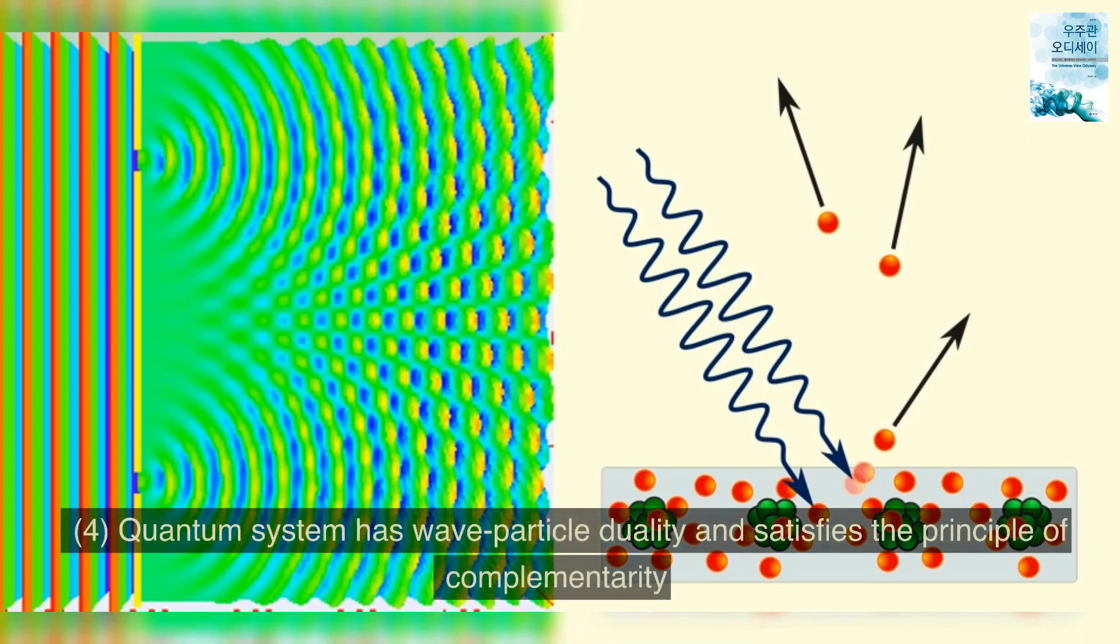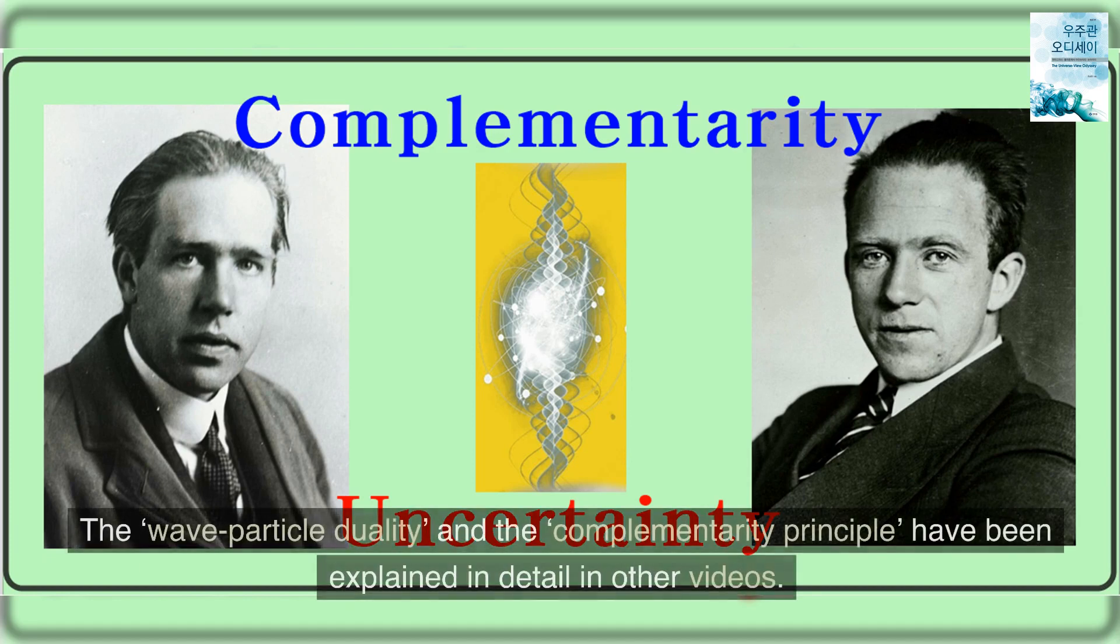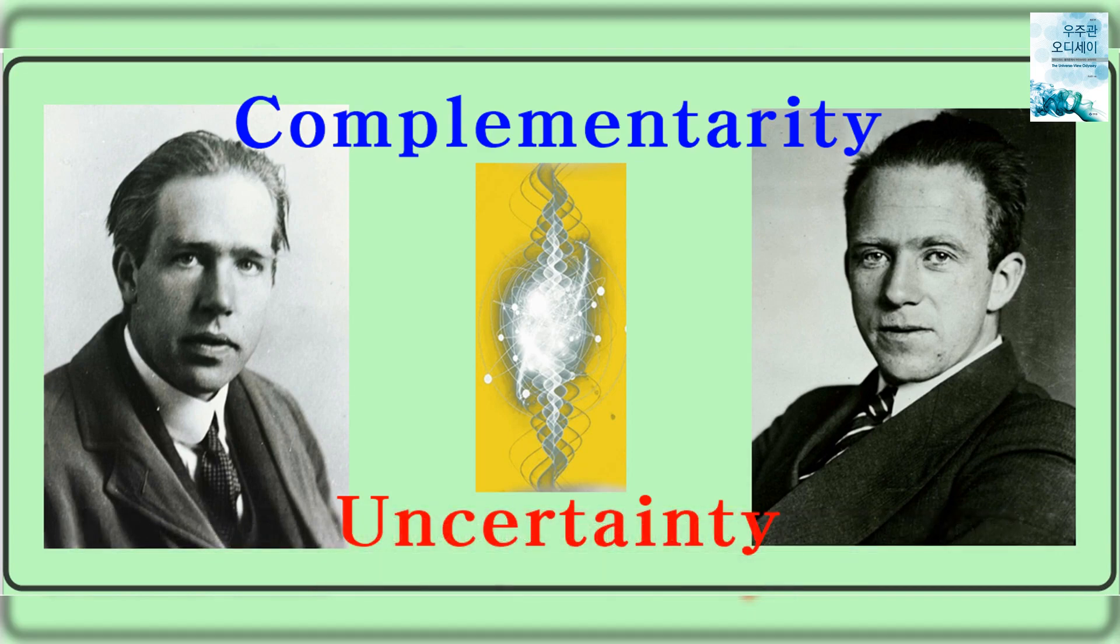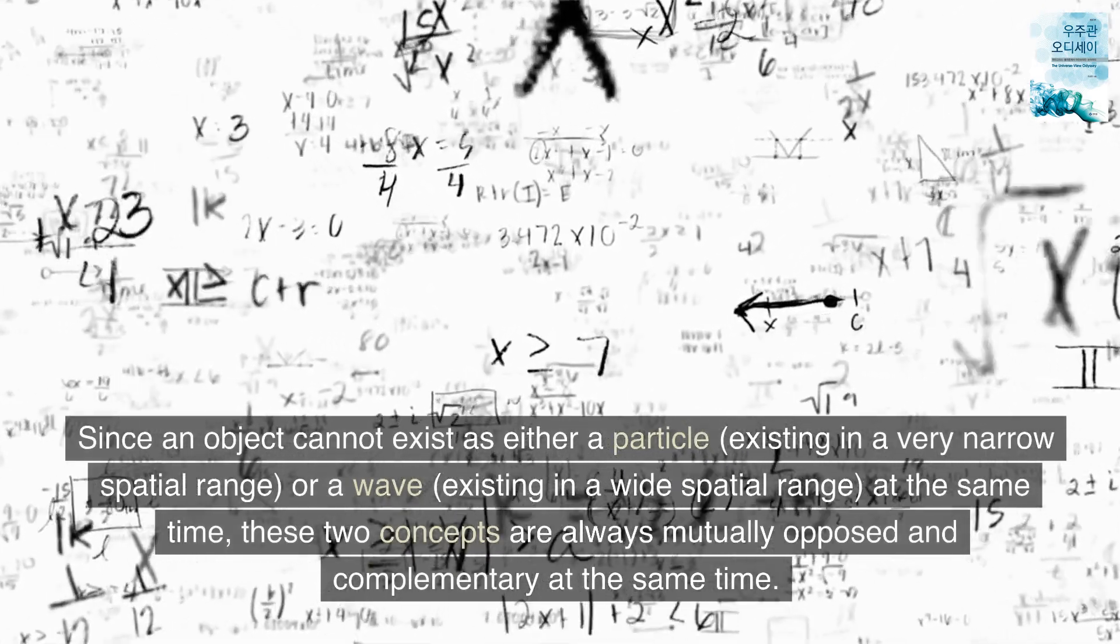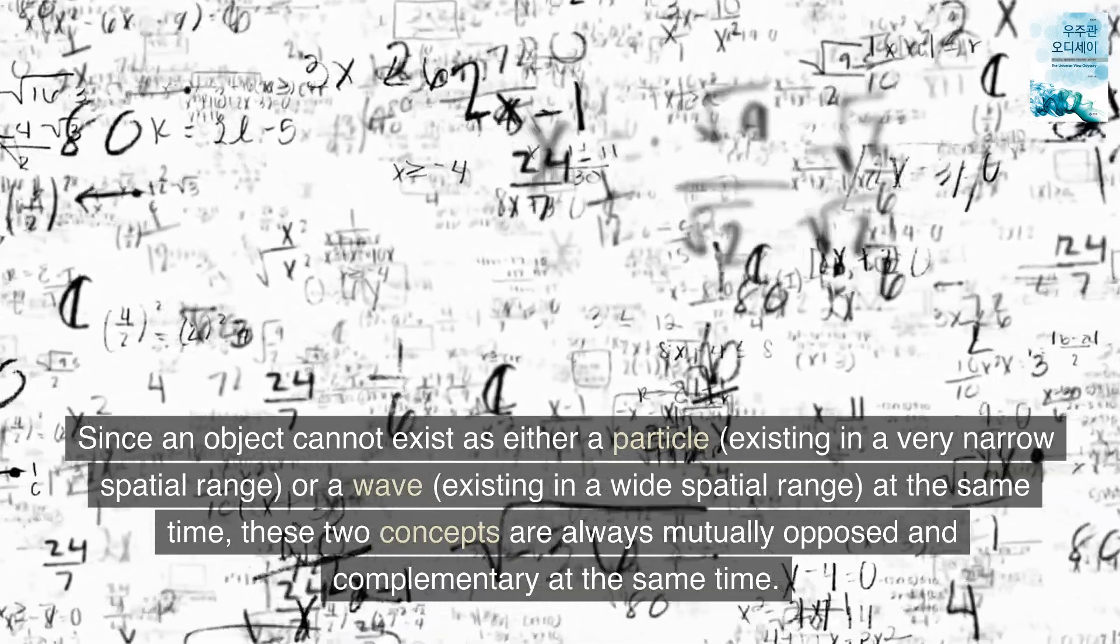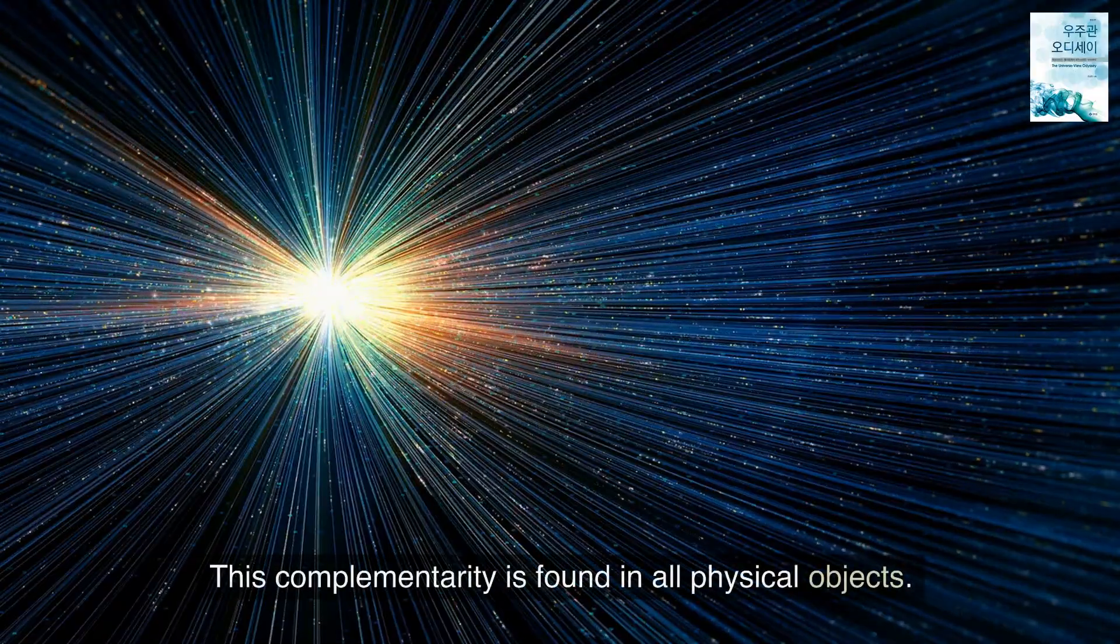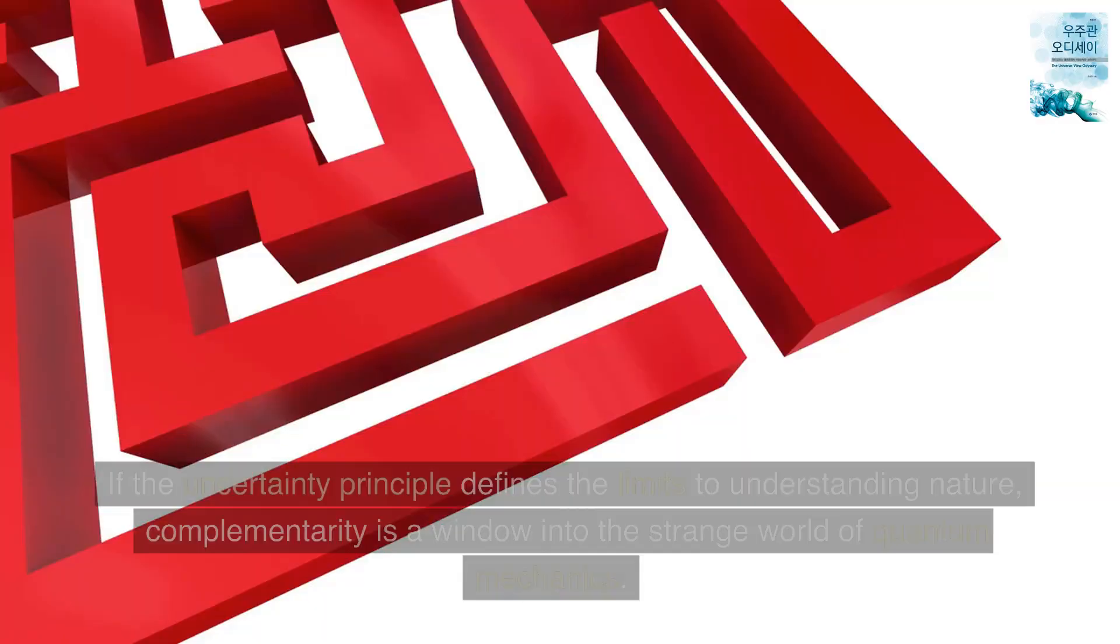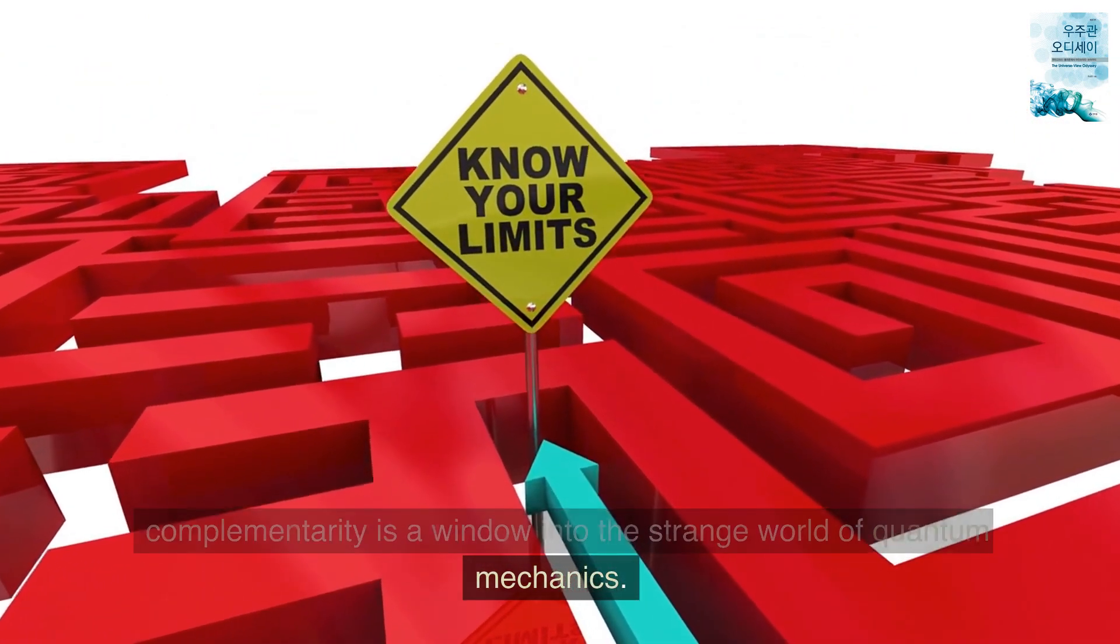4. Quantum system has wave-particle duality and satisfies the principle of complementarity. The wave-particle duality and the complementarity principle have been explained in detail in other videos. In classical mechanics, the opposite and contradictory concepts are interpreted as mutually complementary in understanding the object in quantum theory. Since an object cannot exist as either a particle, existing in a very narrow spatial range, or a wave, existing in a wide spatial range, at the same time, these two concepts are always mutually opposed and complementary at the same time. This complementarity is found in all physical objects. If the uncertainty principle defines the limits to understanding nature, complementarity is a window into the strange world of quantum mechanics.